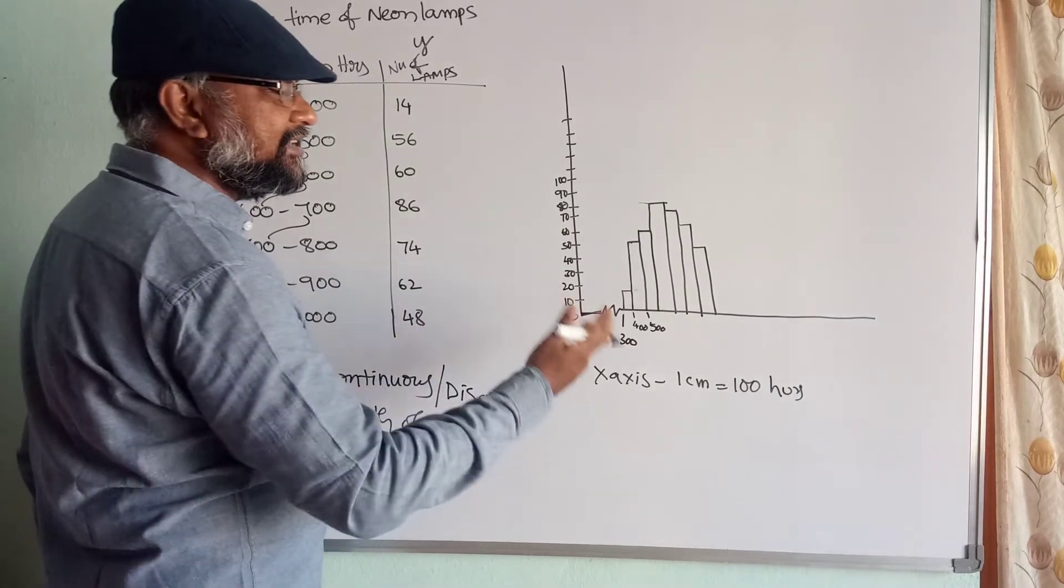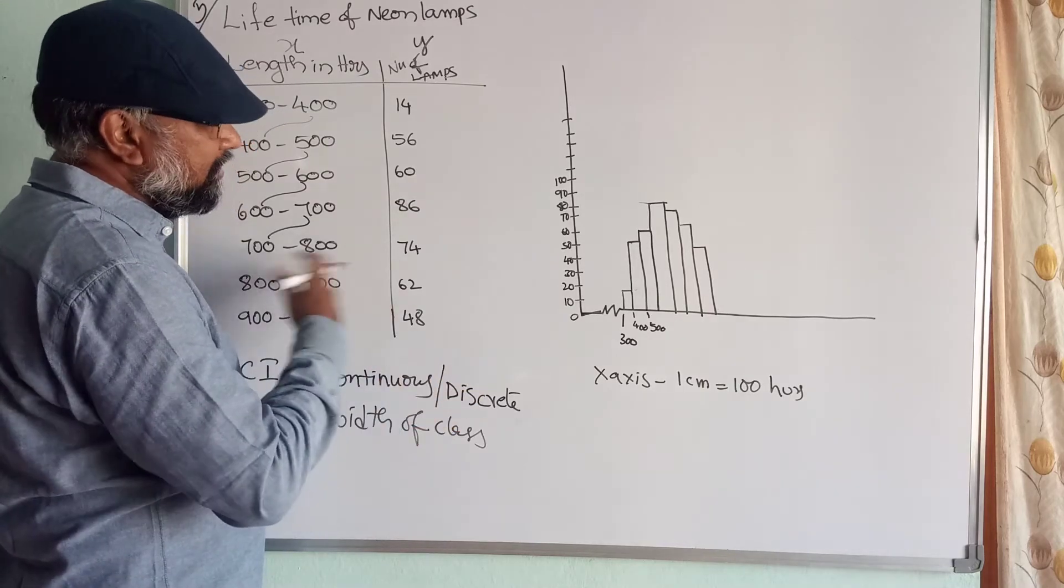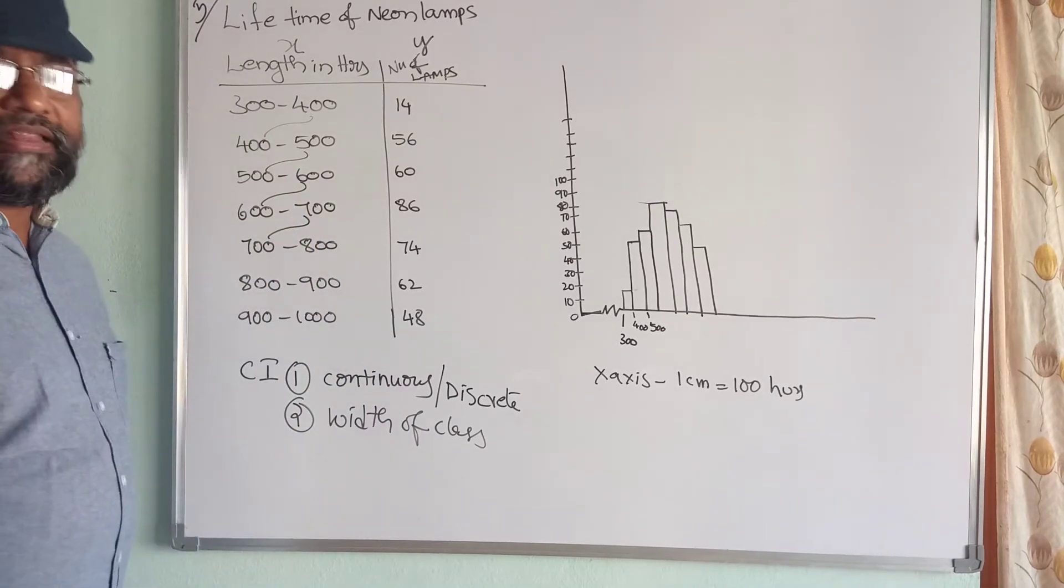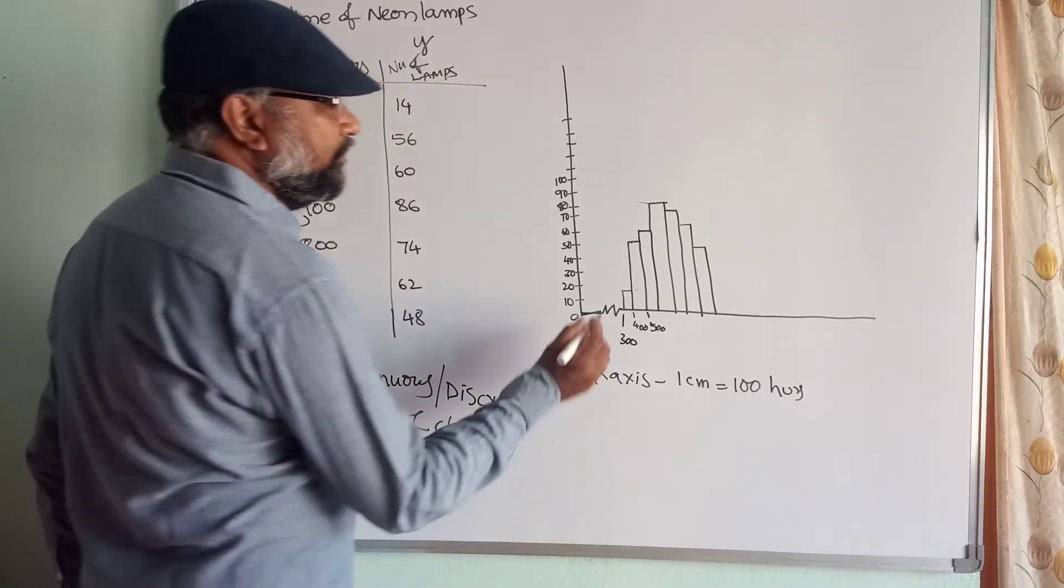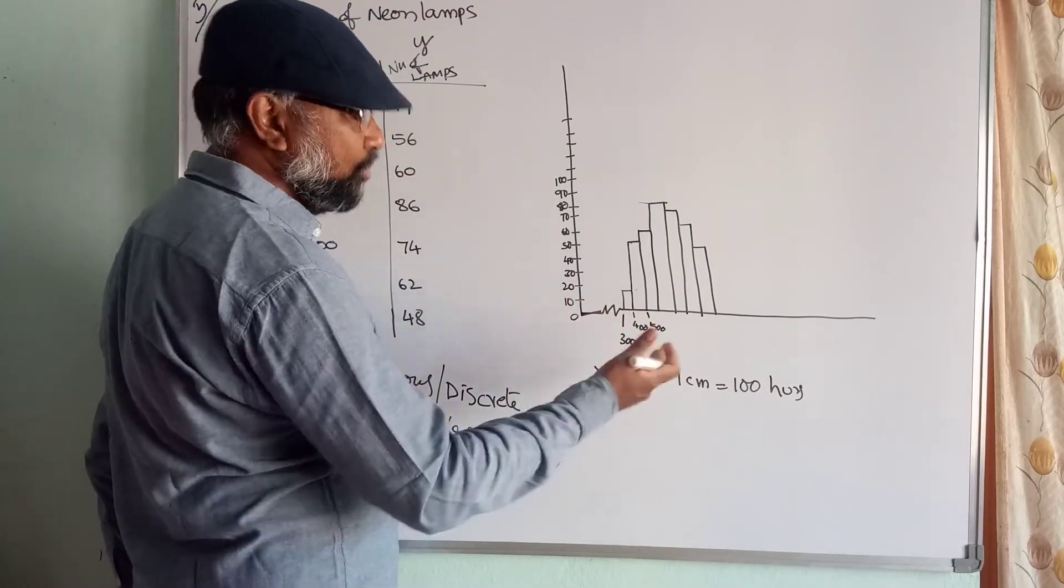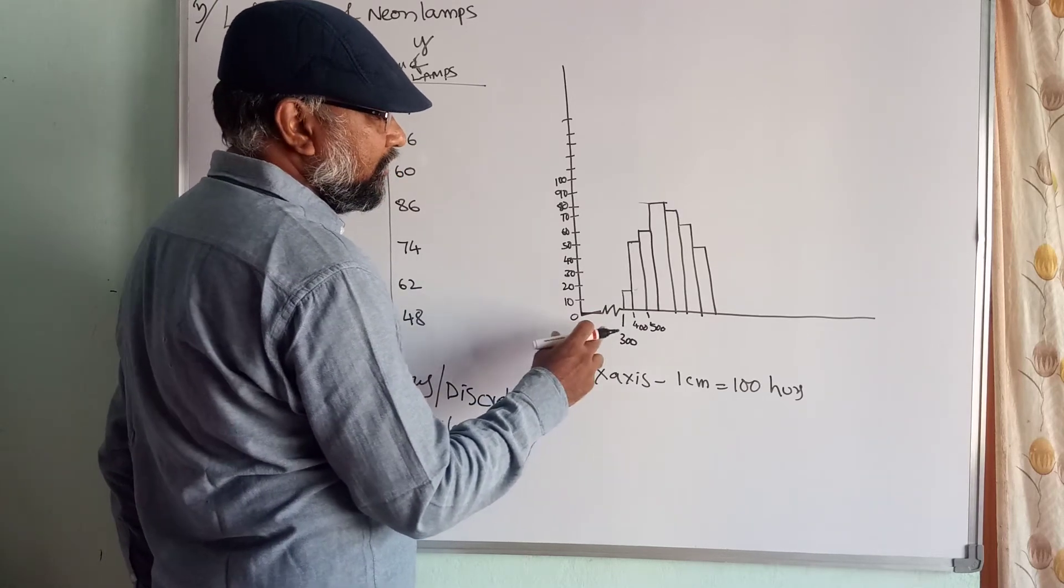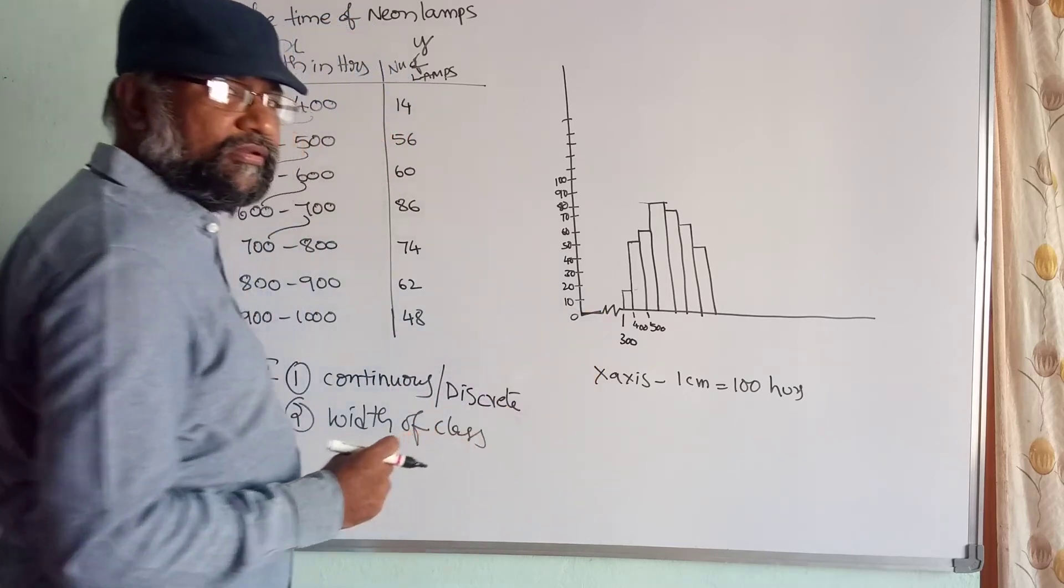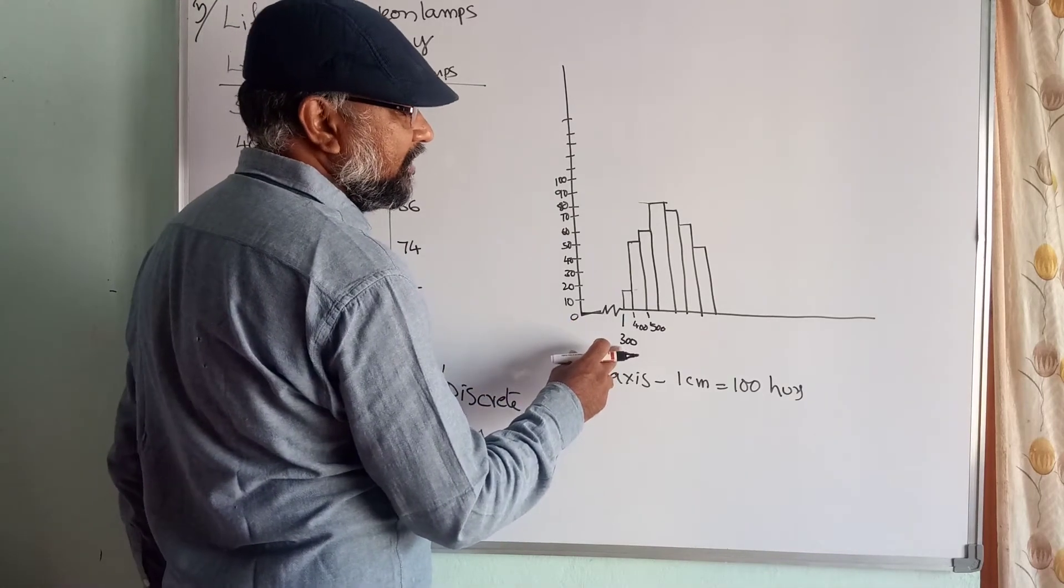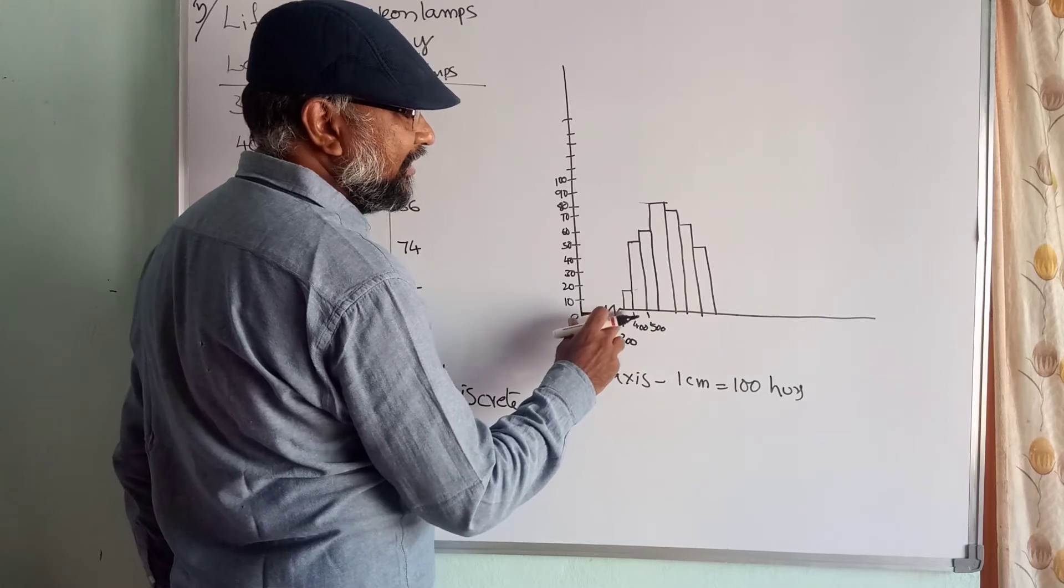Now, the taking scale depends upon your values. Here, the least value started at 300. Therefore, you just make a zigzag. That means you are skipping all the numbers from 0. So 0 is the origin. You have to start from 0, but the low value is given between 0 to 300. Therefore, the first value is 300. So just you can skip one centimeter, keep the zigzag and you can start.